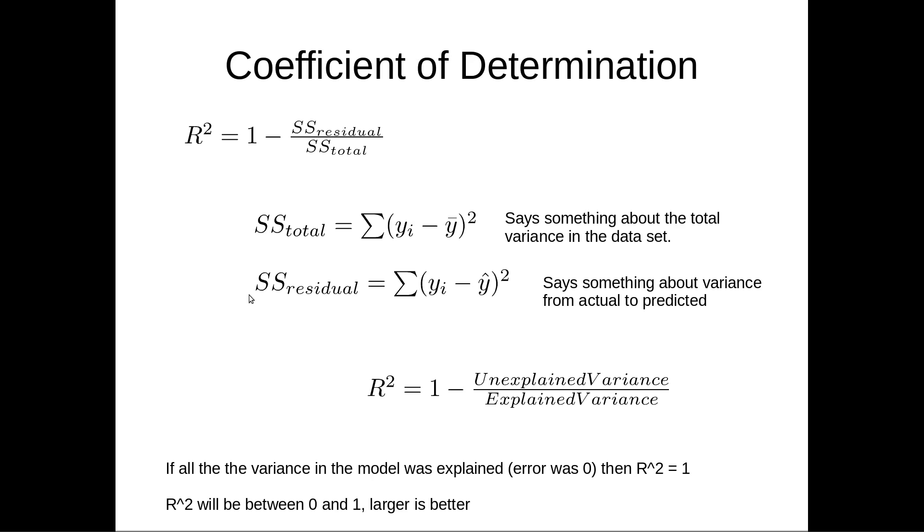Okay, so sum of squares for residuals is pretty close to that. In this case, we're taking the value of the observation and subtracting the value of the predicted value. And so this says something about variance from actual to predicted. And so if you think about that, really what we're saying here is that R squared is equal to 1 minus the ratio of the unexplained variance to the explained variance.